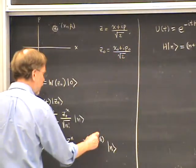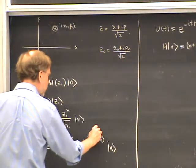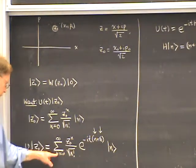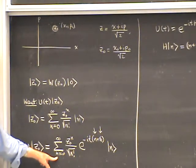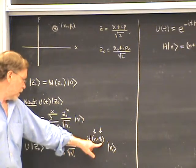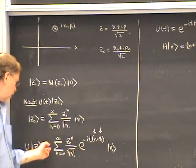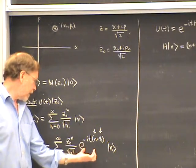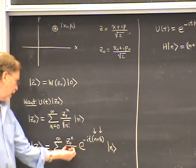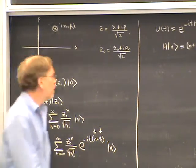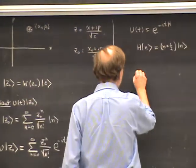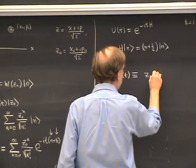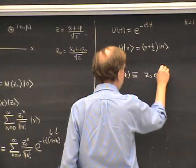There are two parts to this phase factor: the n part and the 1/2 part. The n part depends on the summation index, and the 1/2 part doesn't, so I can take the 1/2 part out of the sum. What's left is the n part: e to the minus itn multiplied by Z₀ to the n. This gives us a combination which I'll call Z(t), defined as Z₀ times e to the minus it.